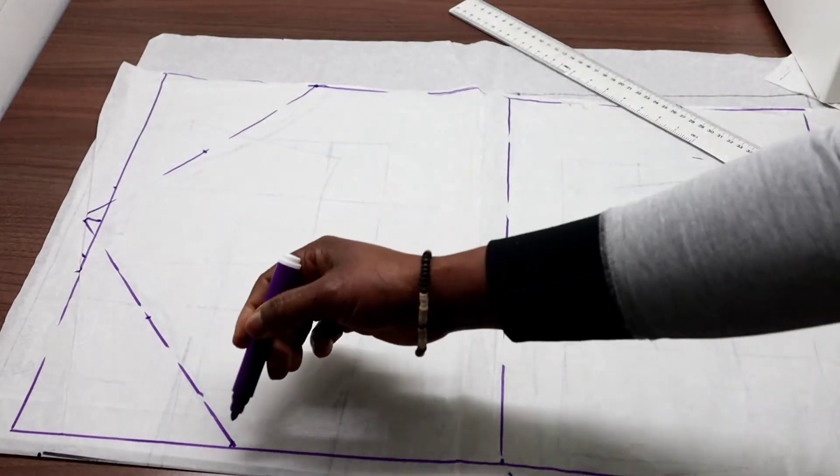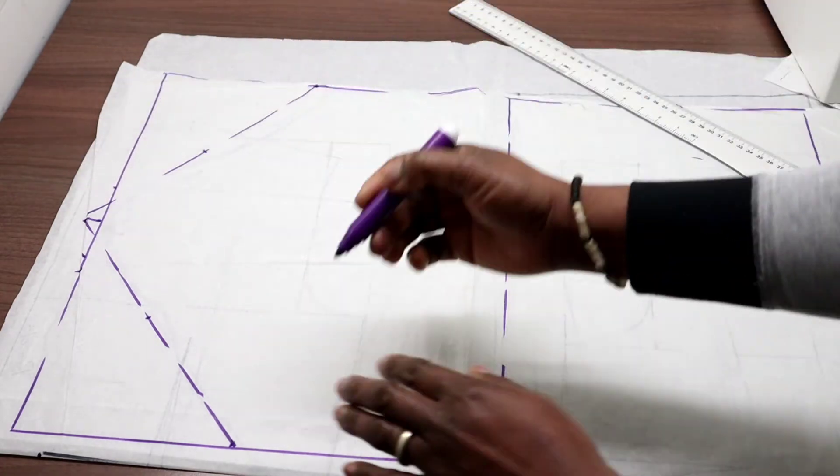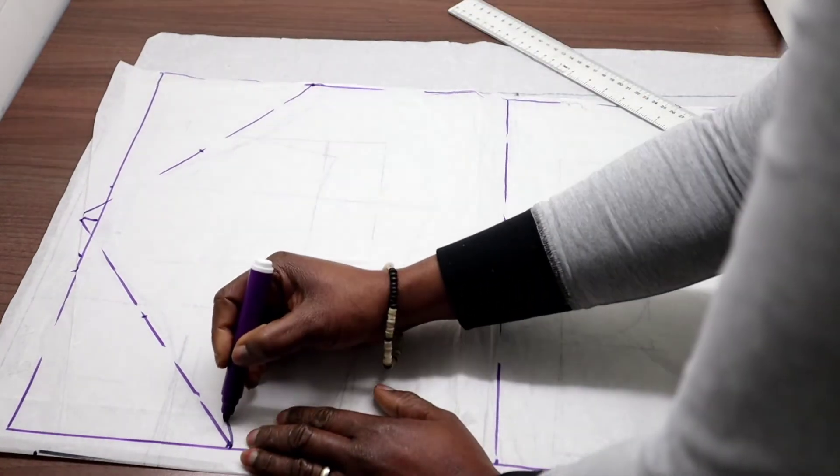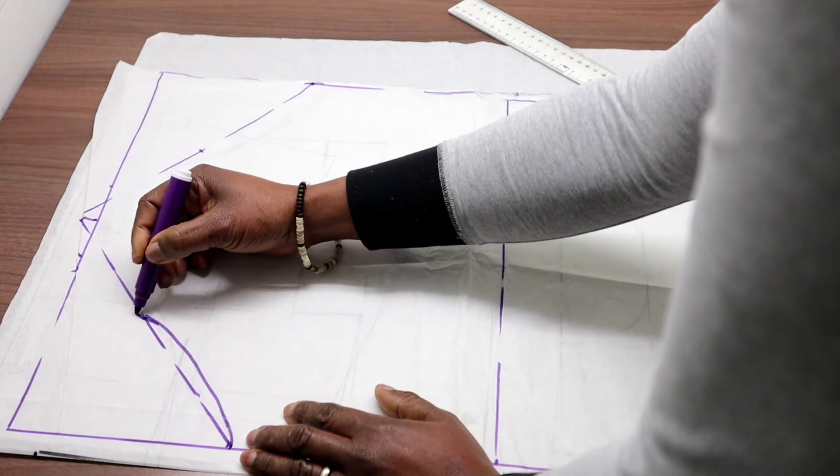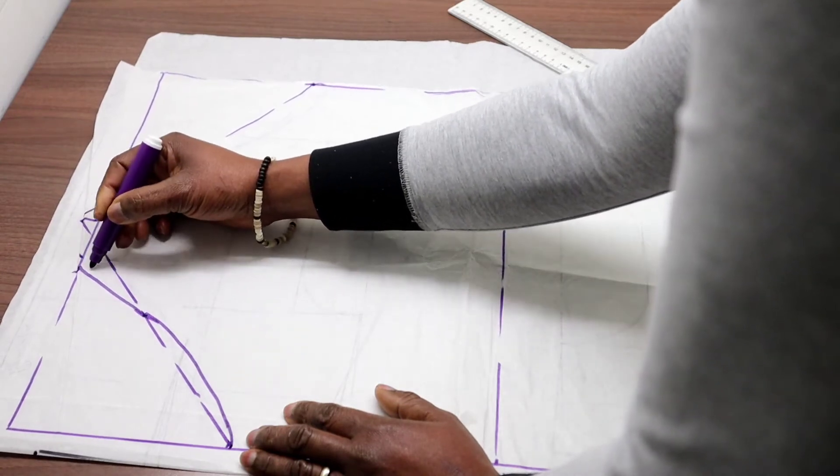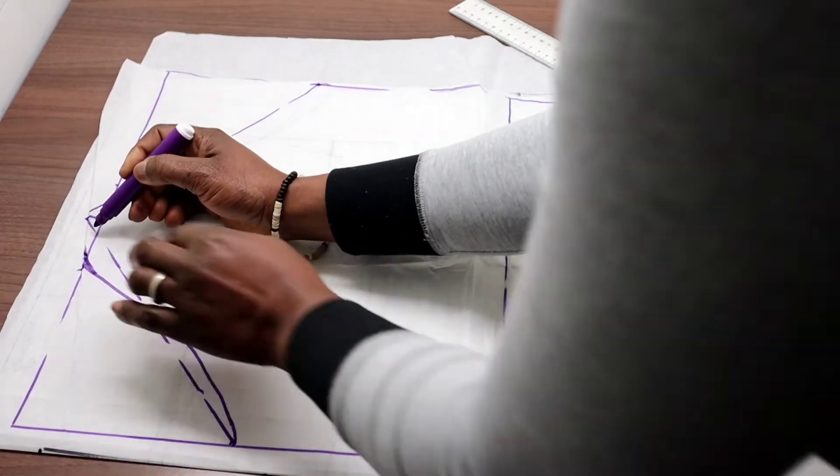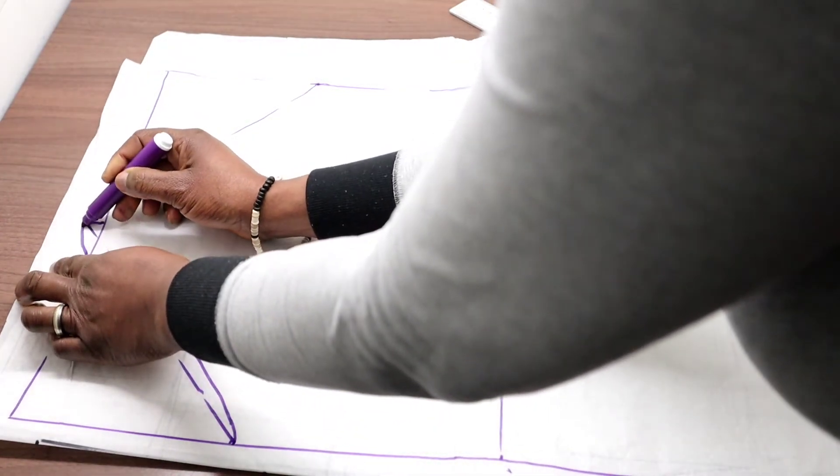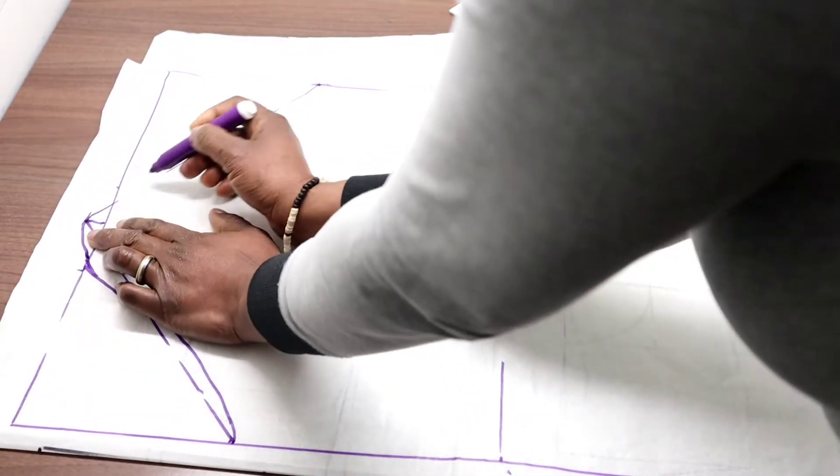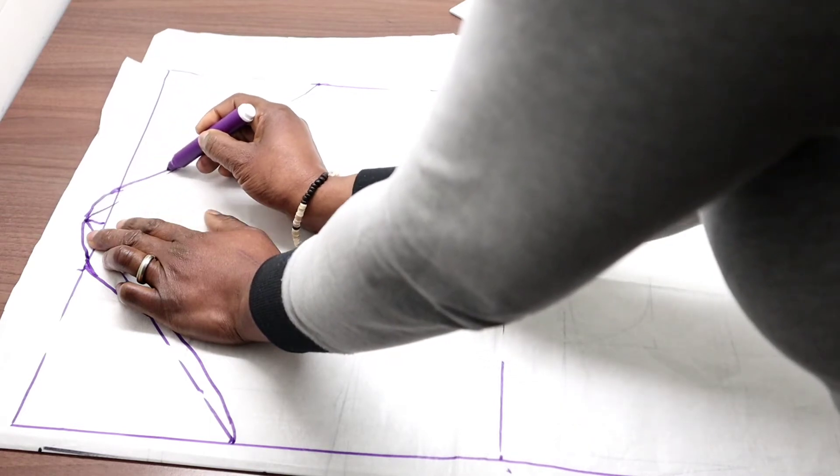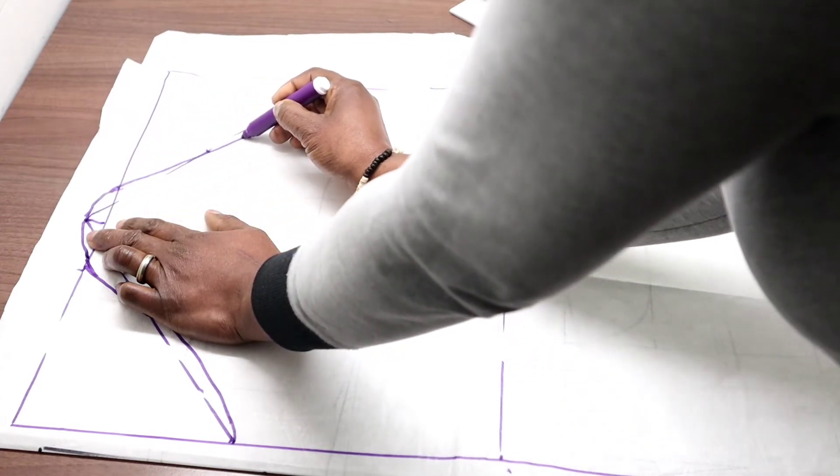The next step is to connect the points. So we will connect from here, the head height, to this point here. From here to the 4 centimeters. Then from the 4 centimeters to the shoulder seam. From the shoulder seam to this point, then to the head height.